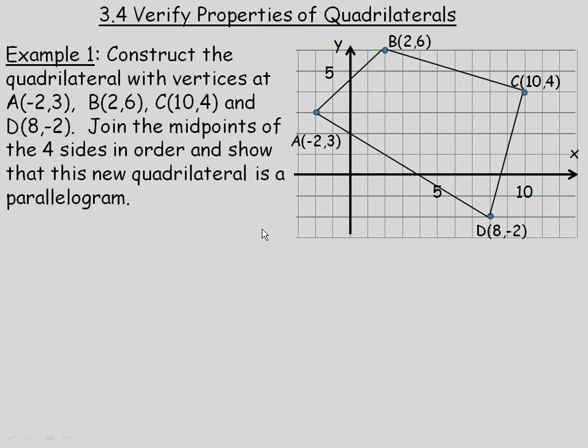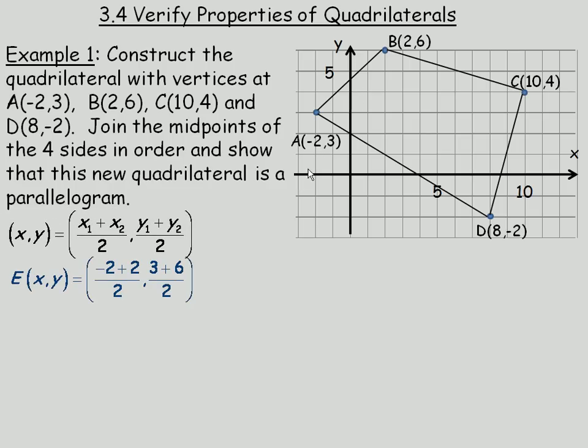We are asked to join the midpoints of the 4 sides in order, so we need to find the midpoints. Here is the midpoint formula, and I will call the midpoint of A, B, E. The midpoint formula says to average the coordinates, so we would add -2 and 2 and divide by 2. The same with 6 and 3, we will add those and divide by 2. And so E ends up having coordinates (0, 9/2), so we will plot E.